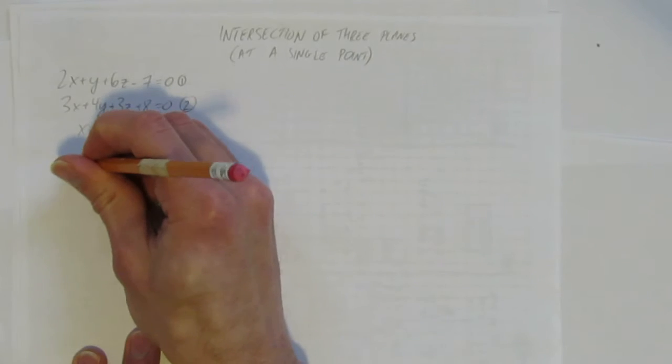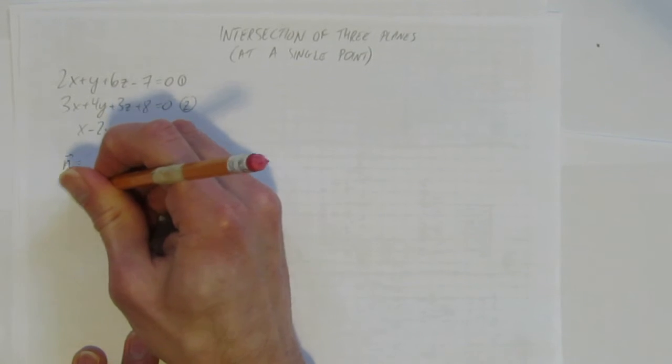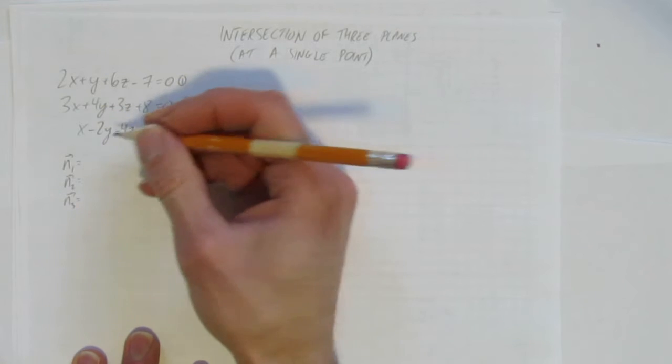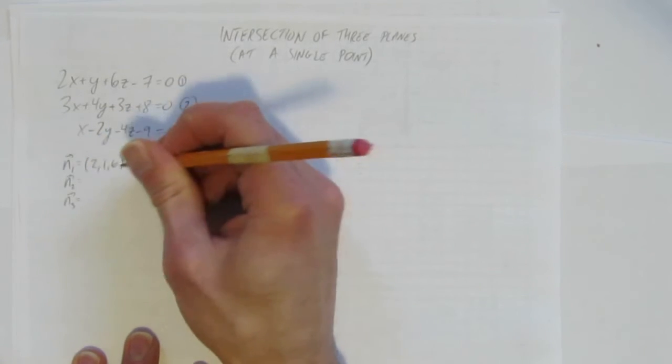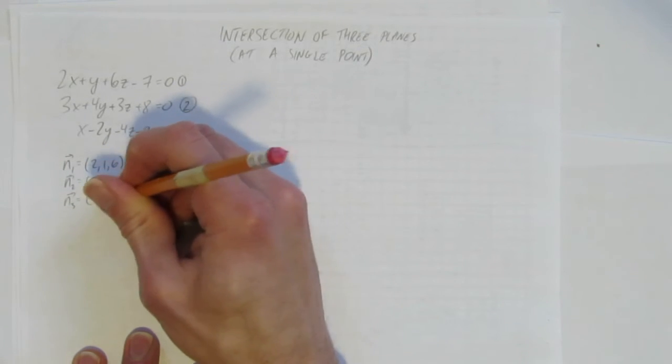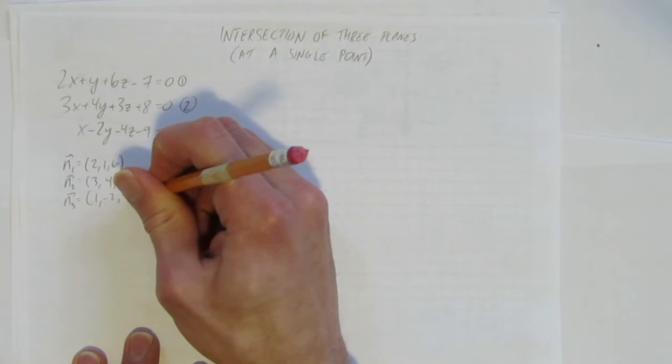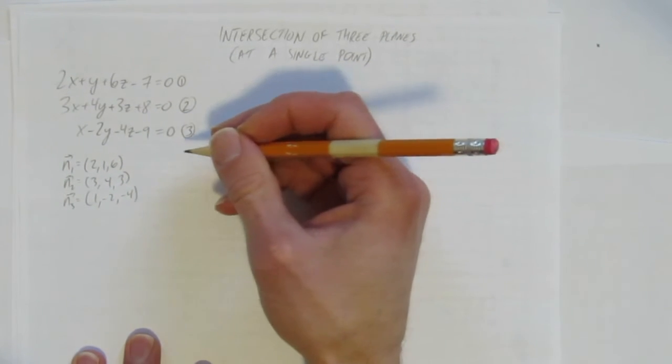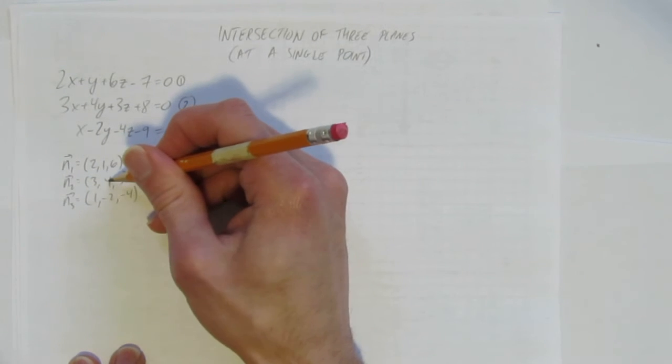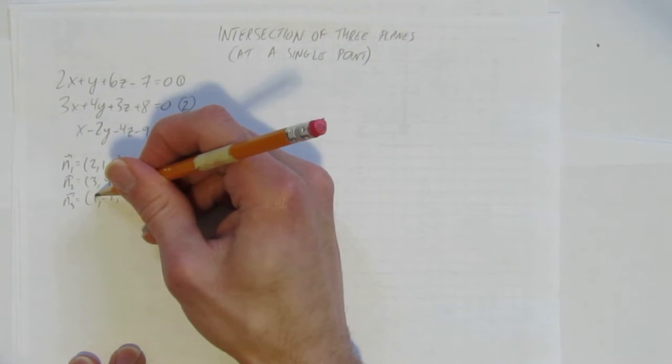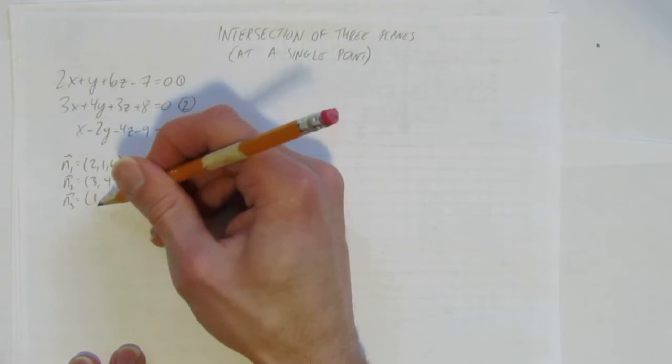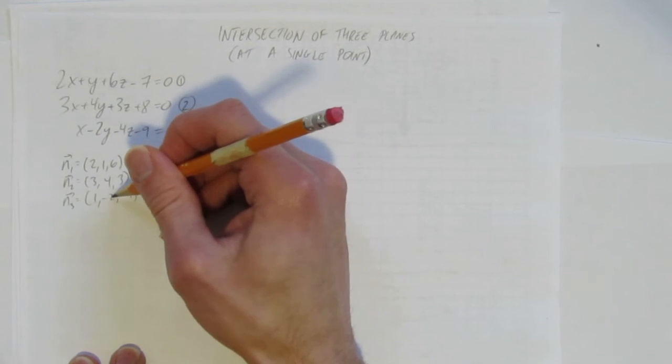First things first, check the normal vectors. I want to see what the normal vectors are, see if they're multiples of each other. That will tell us that the planes are parallel. So their normal vectors are (2, 1, 6), (3, 4, 3), and (1, -2, -4). So notice that they're not multiples of each other. To get to 3 you'd be timesing by 1.5, but 1 times 1.5 is not 4. To get from 2 to 1 you'd divide by 2, but 1 divided by 2 is not -2, so that's not parallel.